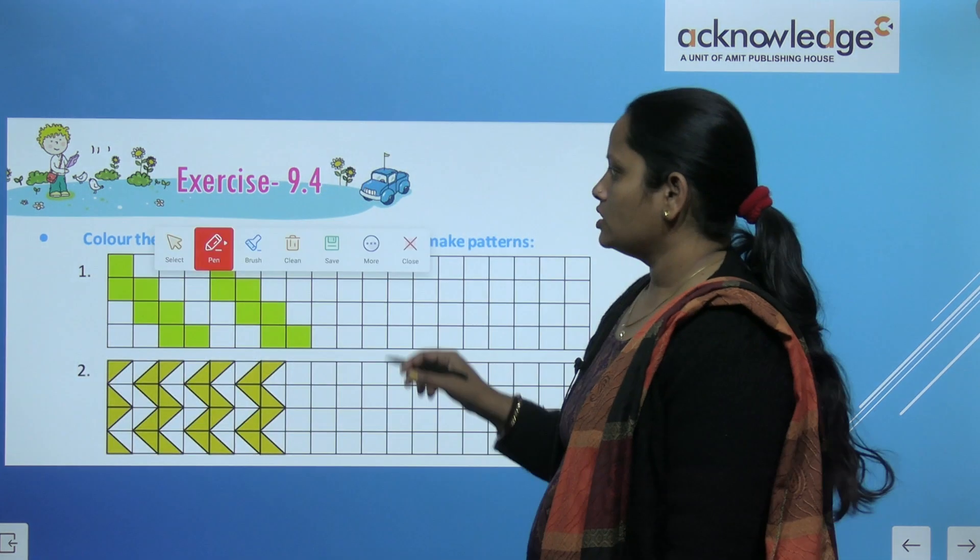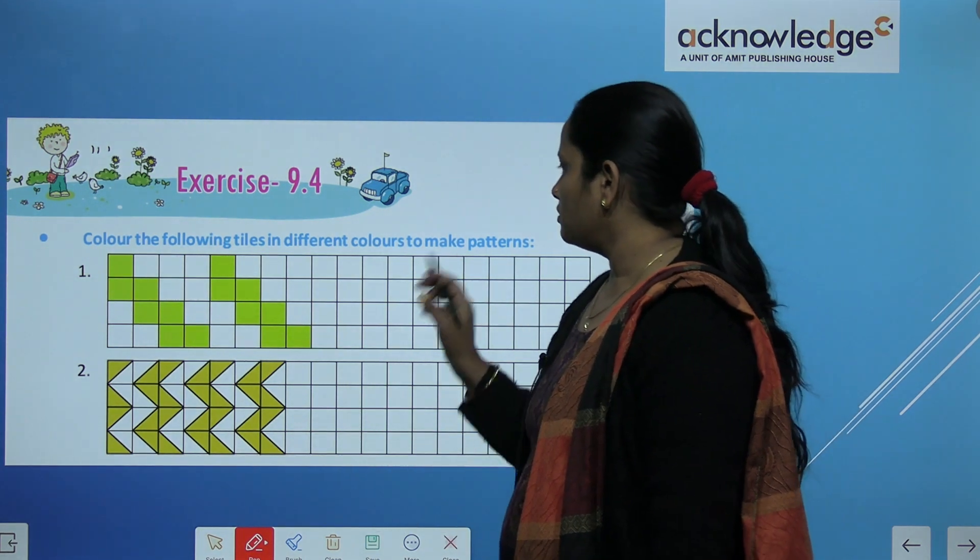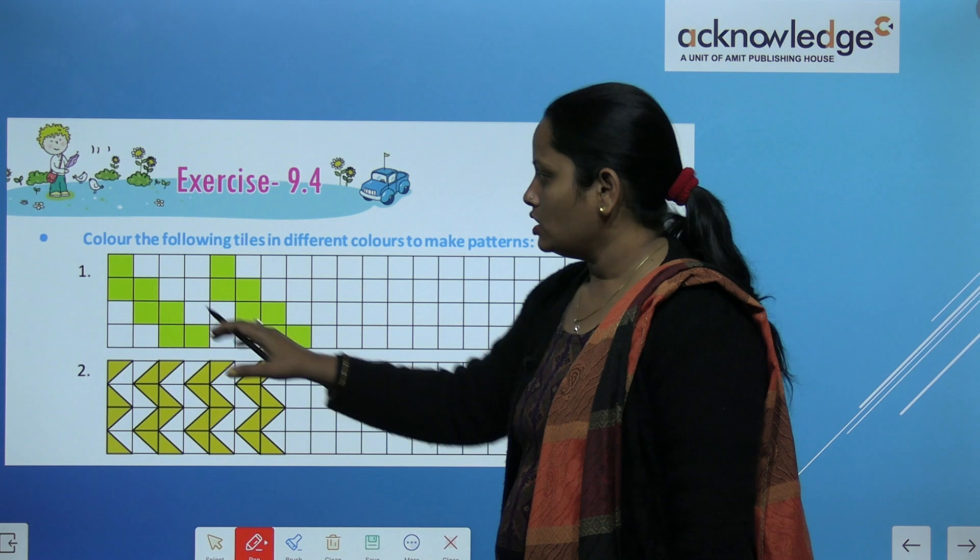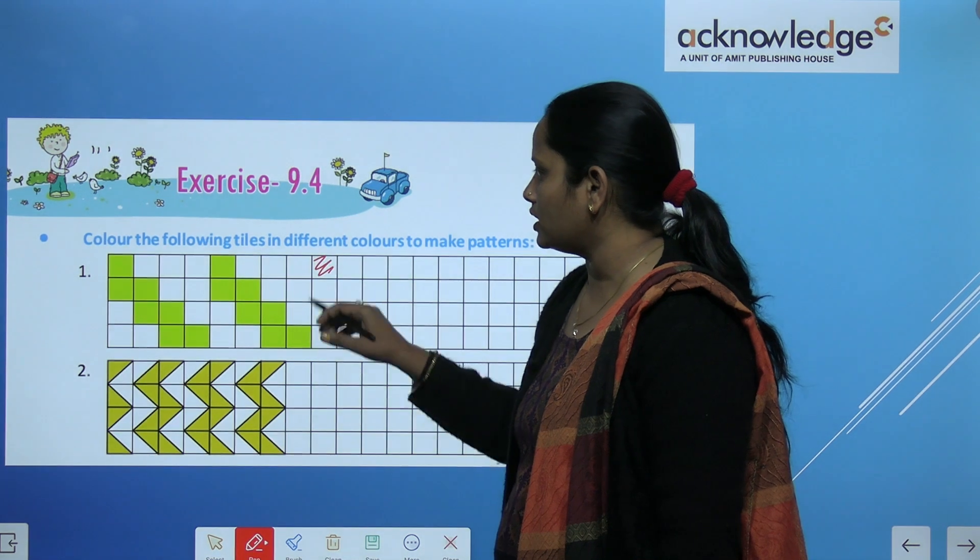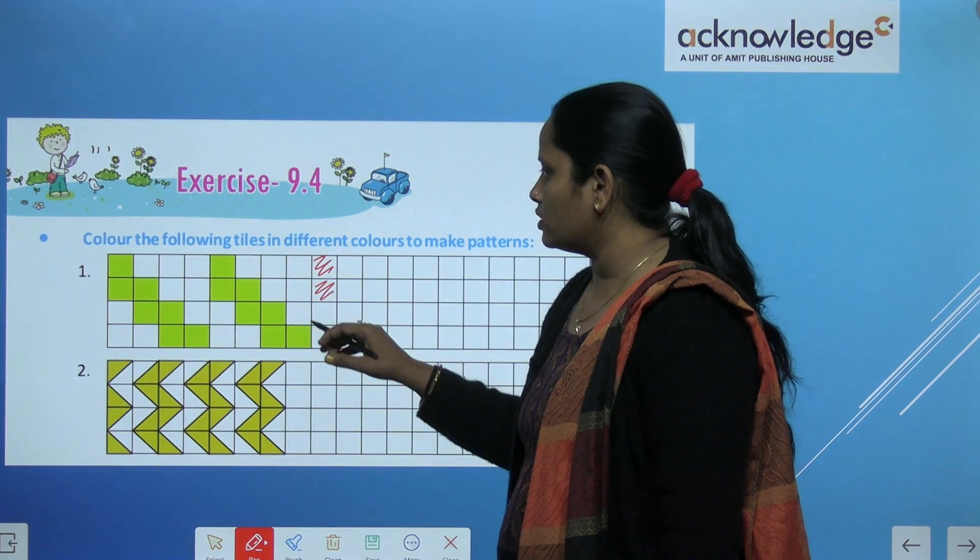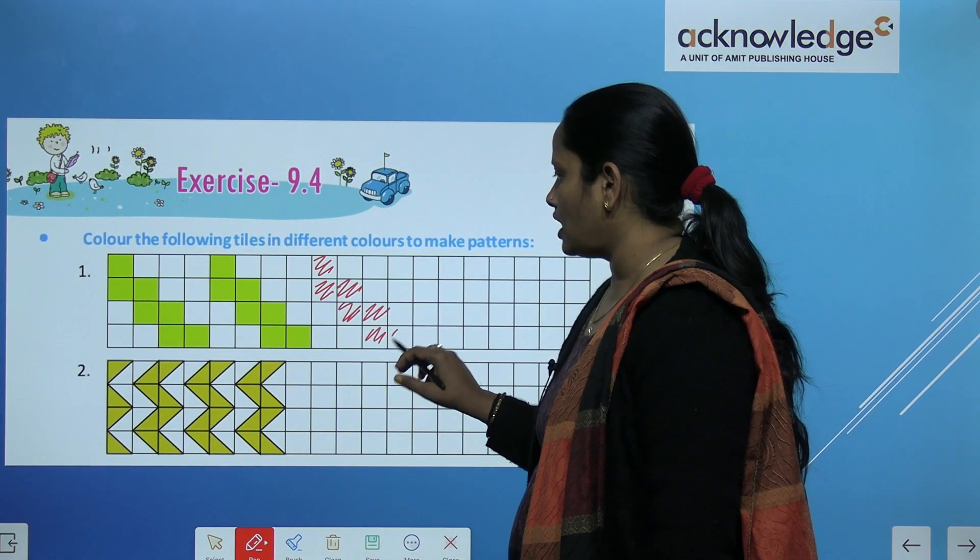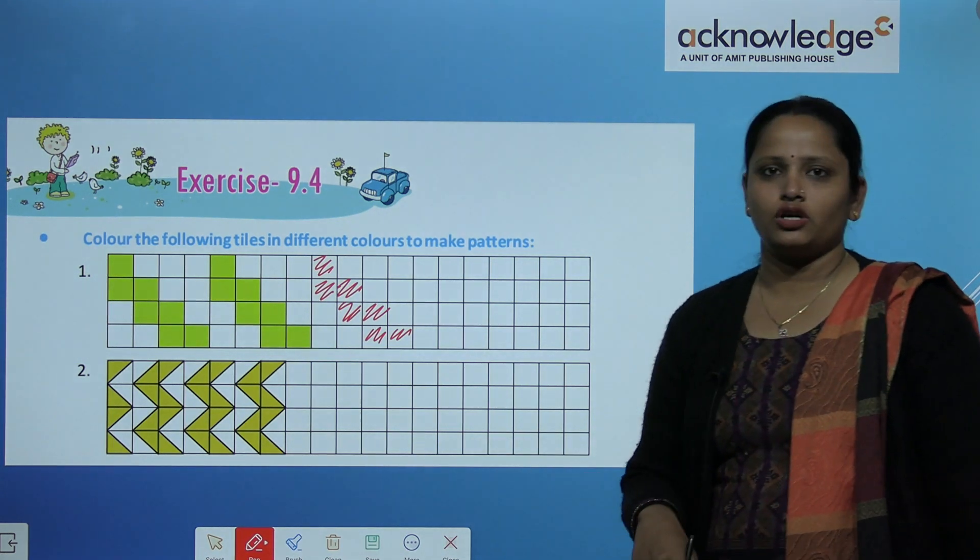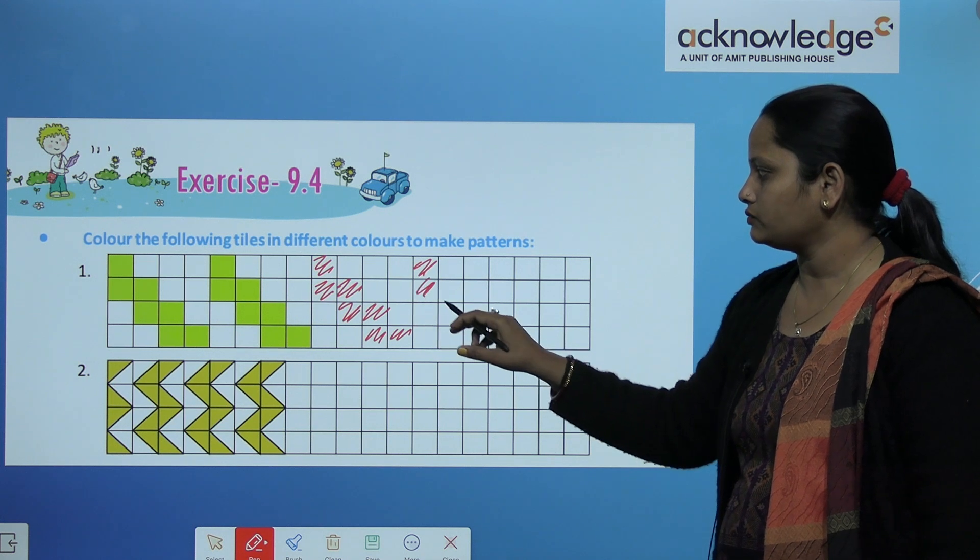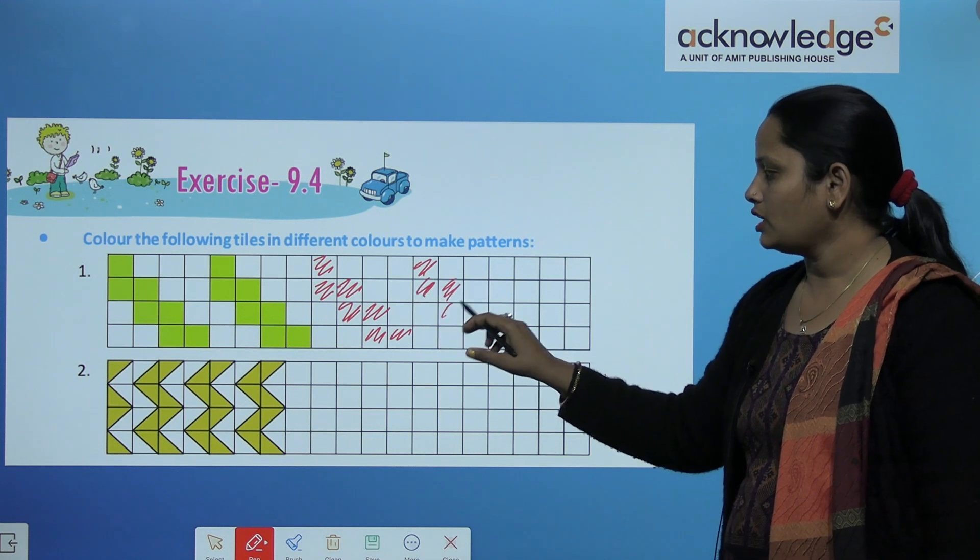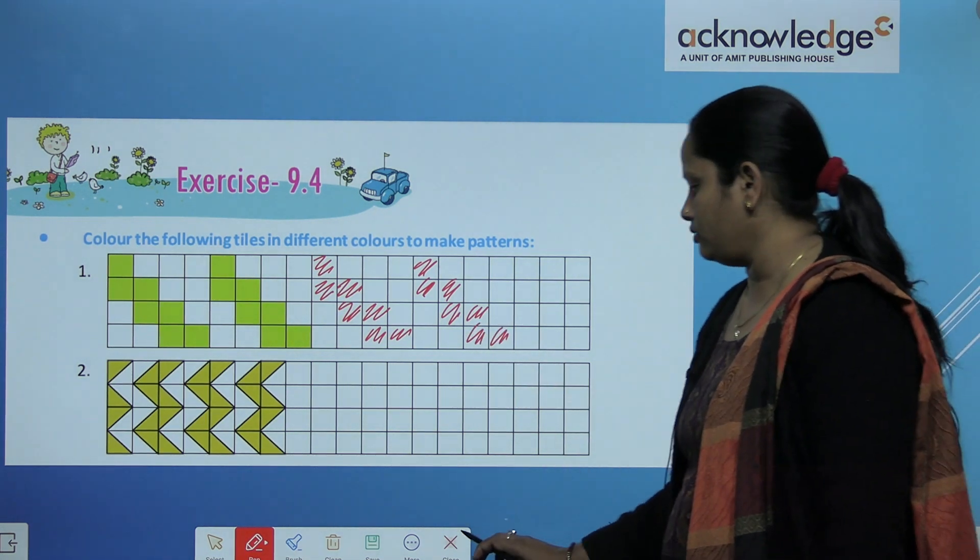So what we have to do? We have to color the following tiles in different colors to make pattern. So ye same pattern hammein banana hai. To humne kya kya, one two three block ko chhoda. To one two three block ko chhodke isse hum color karenge. Ab iske niche wale ko color karenge, iske side ko karenge. Again this and this, again this and this. So like this you have to complete the given figure. Same hum three blocks chhodke, phir hum same cheez karenge. I hope this is clear children. So like this you have to complete the given figures.